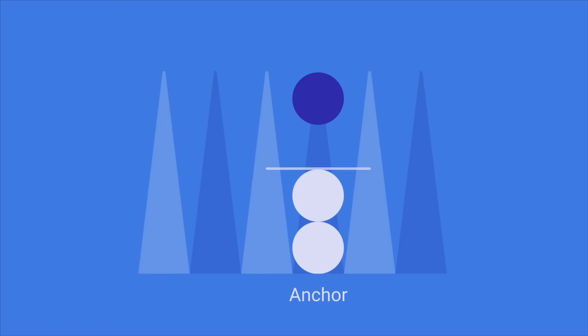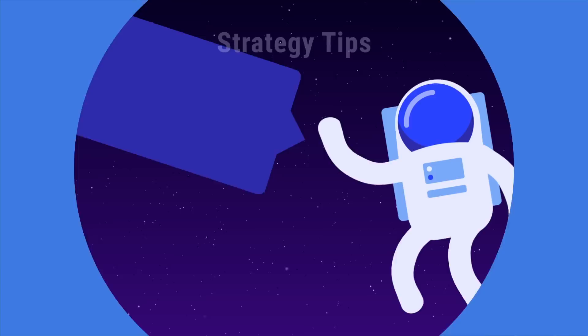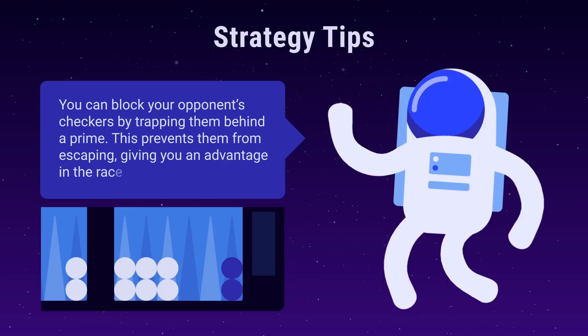Section 5. Anchors and Primes. Two or more checkers on a point is called an anchor. An opponent's checkers can't move to your anchors as you're occupying these points. When anchors are placed next to each other, it's called a prime. You can block your opponent's checkers by trapping them behind a prime. This prevents them from escaping, giving you an advantage in the race.